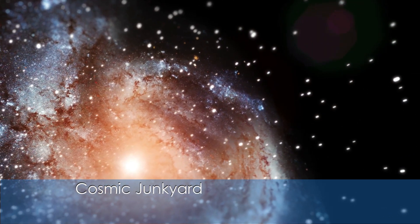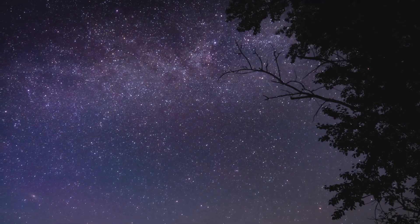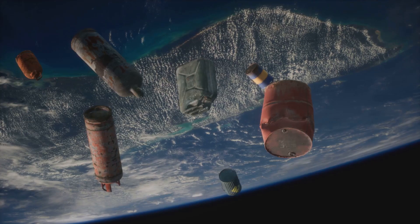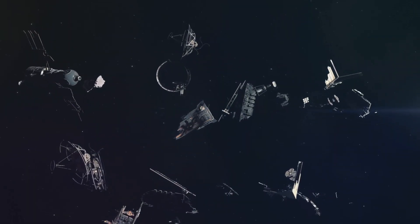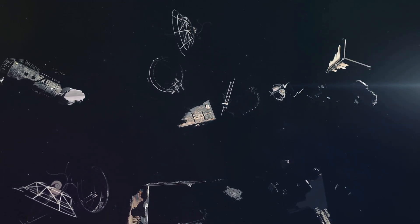We tend to think of space as this pristine, infinite void, but we've left our mark even in the blackness above. Orbiting our planet, a chaotic swarm of debris circles Earth at breakneck speeds. Millions of pieces of junk—defunct satellites, discarded rocket stages, even flecks of paint—pose a very real danger.